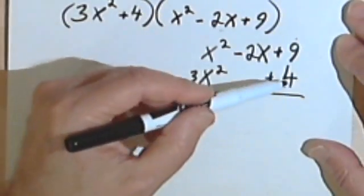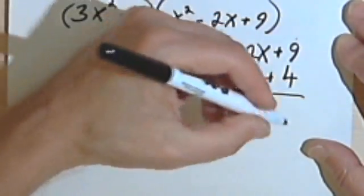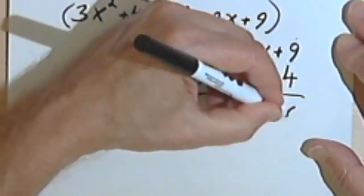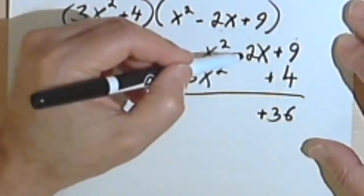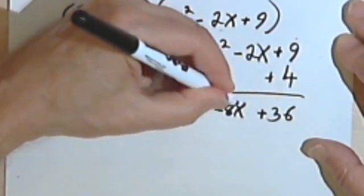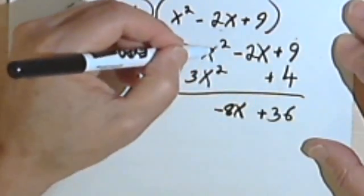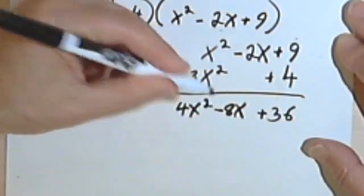So now I'm just going to multiply 4 times each of these terms. 4 times 9 is 36. I'll put my positive sign in. 4 times negative 2x is negative 8x, and 4 times x squared will be 4x squared.